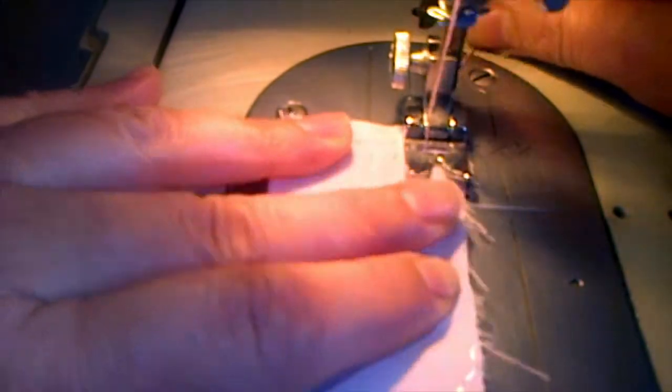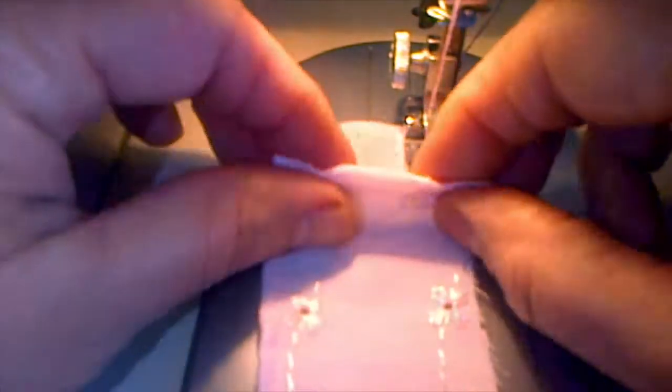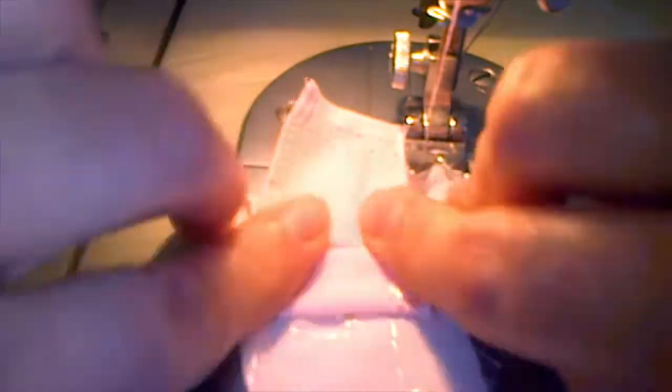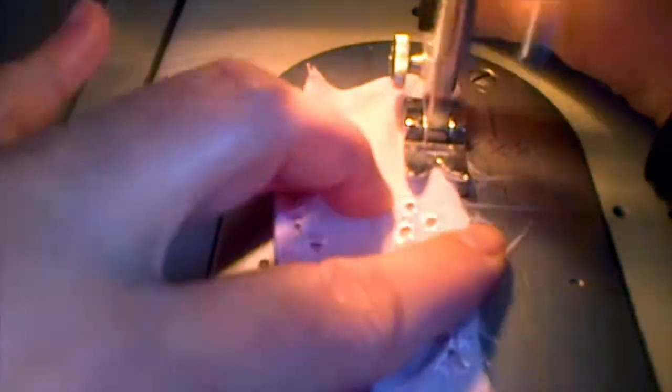After hemming one edge run a gathering stitch on the other edge but instead of gathering you can also pleat. That's up to you if you like. After finishing the seam pull the bobbin thread to make gathering in this strip.